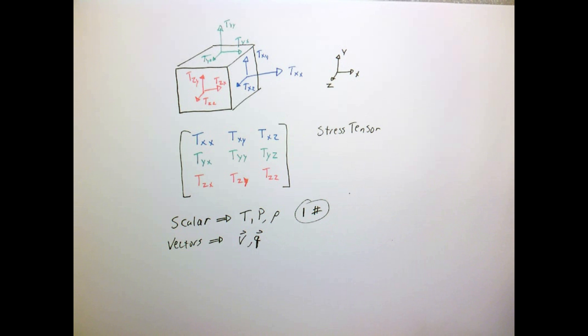Vectors are things like velocity and heat flux. These have three numbers, right? The x, y, and z components of the vector, because velocity has a magnitude and a direction.